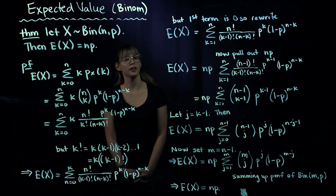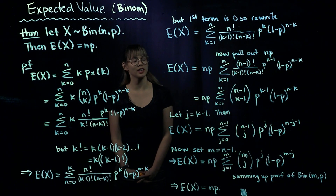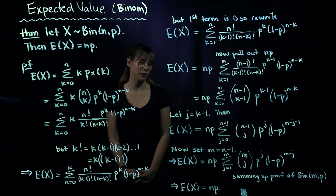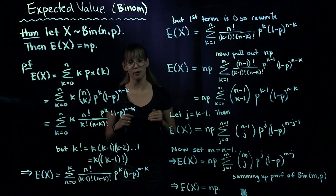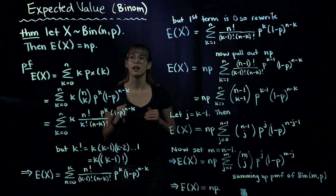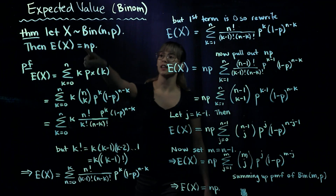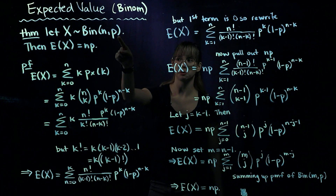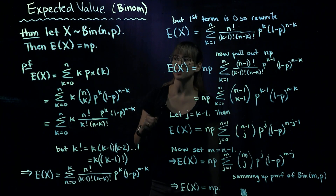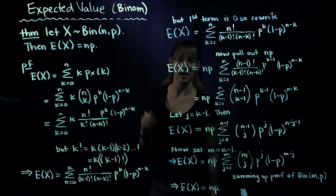In an earlier video we looked at the expected value for a binomial random variable and showed that its expected value was n times p. Now we're going to talk about why this is true in general. So if x is a random variable with a binomial distribution with n trials and probability of success p, then the expected value of x is going to be n times p.